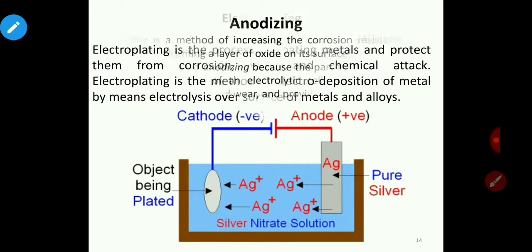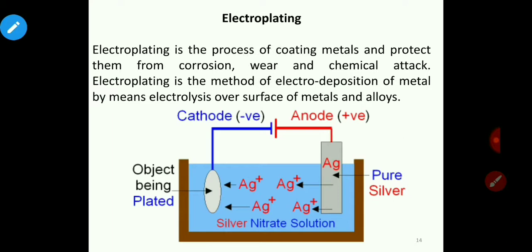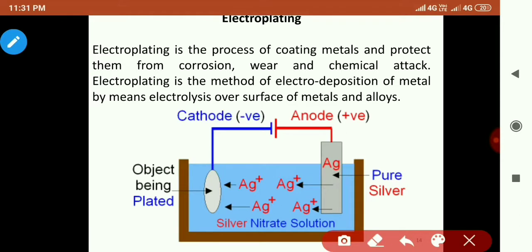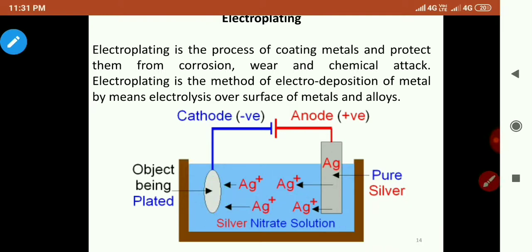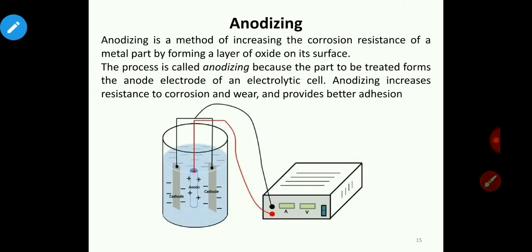Another important method is electroplating — the process of coating metals to protect them from corrosion, wear, and chemical attack by electro-deposition. For example, to silver-plate iron, the iron article is placed at the cathode and silver at the anode, both dipped in silver nitrate solution. Current is passed, silver ionizes into Ag⁺ ions, and Ag⁺ ions get deposited over the iron, forming a protective coating.